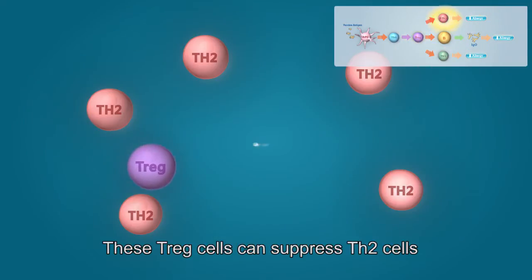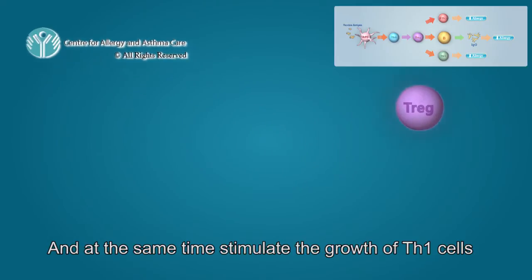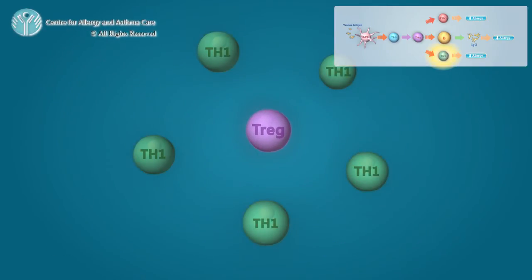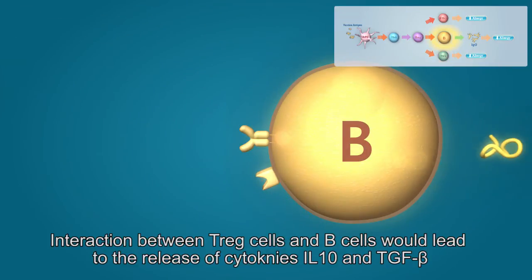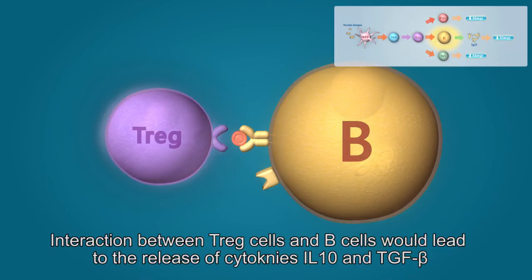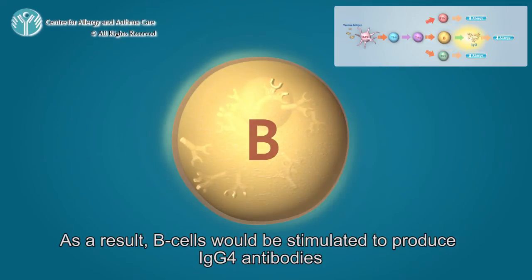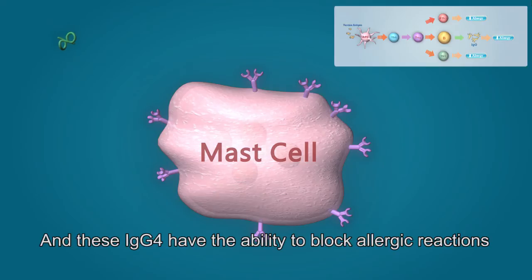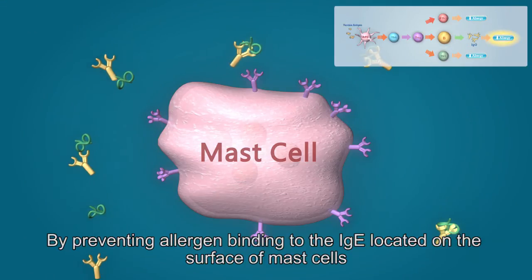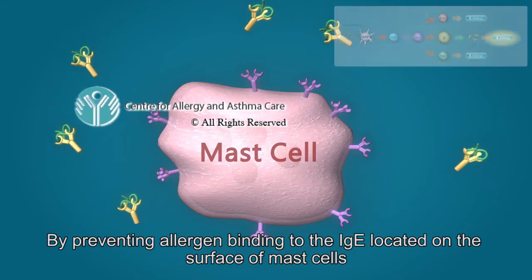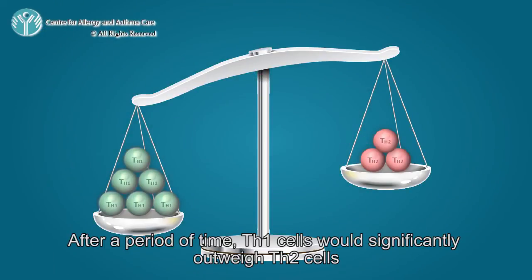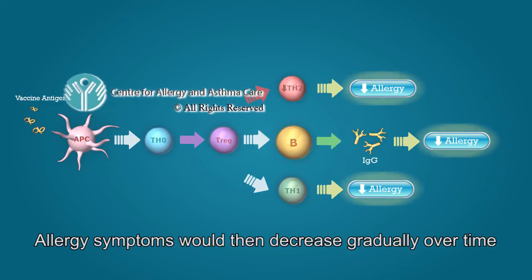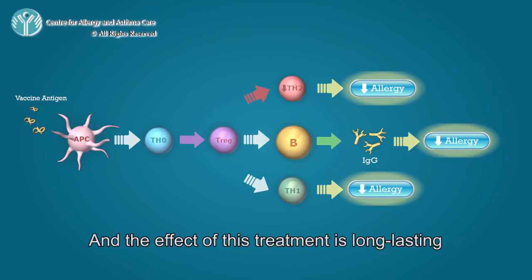These Treg cells can suppress Th2 cells, and at the same time stimulate the growth of Th1 cells. Interaction between Treg cells and B cells will lead to the release of cytokines interleukin-10 and transforming growth factor beta. As a result, B cells will be stimulated to produce IgG4 antibodies, and these IgG4 antibodies have the ability to block allergic reactions by preventing allergen binding to the IgE located on the surface of mast cells. After a period of time, Th1 cells would significantly outweigh Th2 cells. Allergic symptoms would then decrease gradually over time, and the effect of this treatment is long-lasting.